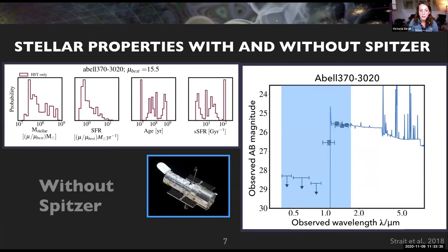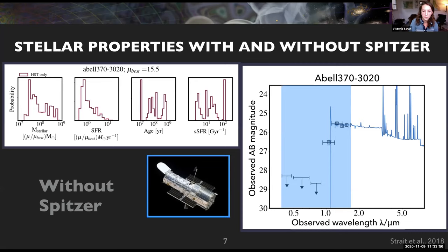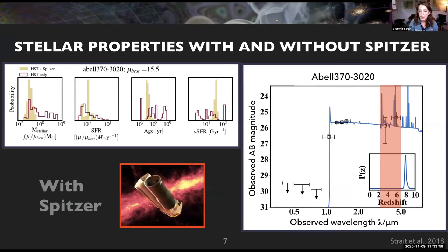Just to drive this point home, this is a spectral energy distribution fit — magnitude versus wavelength — where the black points are data and the blue line is the best fit template. The blue highlighted region shows just the Hubble fluxes, and over here are the statistical distributions of stellar mass, star formation rate, age, and specific star formation rate. When we add these two fluxes from Spitzer, we can say something meaningful about these quantities.